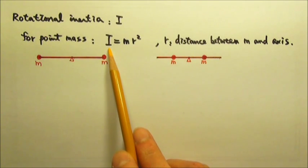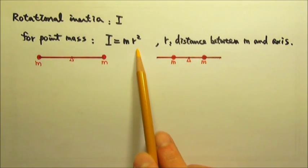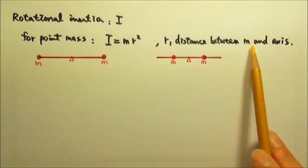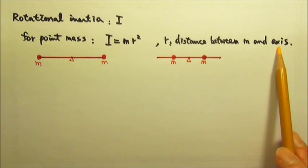To find the rotational inertia of a point mass, we can use this equation: I equals mr squared, where r is the distance between the mass m and the rotational axis.